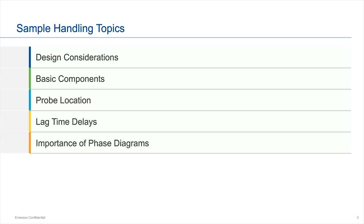We're going to do a quick review of design considerations, then go into the basic components. We'll spend a little time on probe location — that's critical because the GC works like garbage in, garbage out. The probe is your first part of the sample handling system; if you get it wrong there, it won't be made up for later. We'll also cover lag time delays and the importance of phase diagrams.